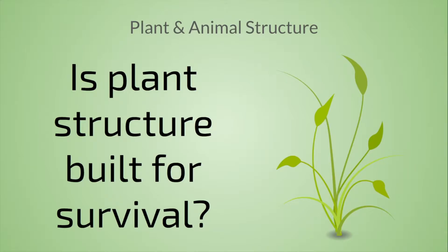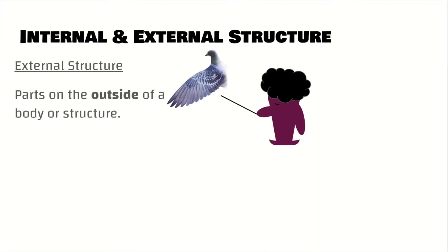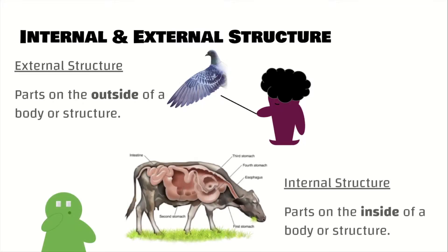Is plant structure built for survival? Let's cover some things first. We have the internal and external structure of plants and animals. External structure — that's the parts on the outside of a body or structure. So this bird has its wings, that's part of its external structure. Internal structure refers to the parts inside of a body or structure. This cow on the inside has its organs, intestines, and stomach with multiple chambers. We've got internal and external structure, and these parts help the animal or plant grow, survive, and reproduce.